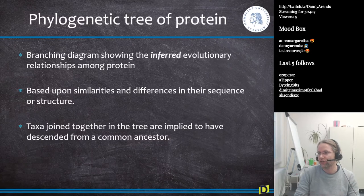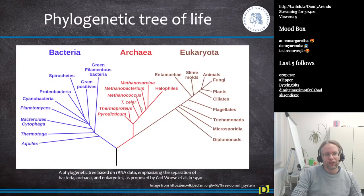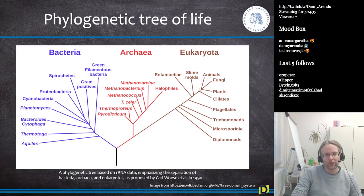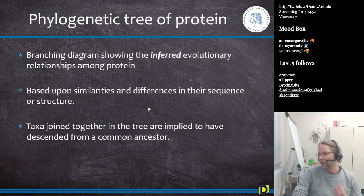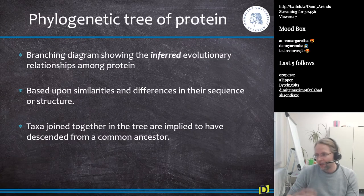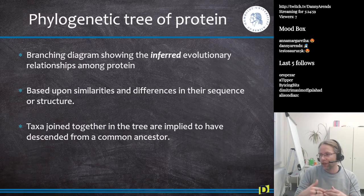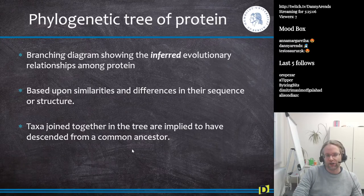The sequence has changed but the structure did not. When you look at a tree and see taxa joined together — for example, archaea joined with eukaryota at a certain point — that means there was a common ancestor for both groups. Similarly, we can see a common ancestor between animals, plants, and fungi, and also between methanosarcina and halophiles. The idea is that when two branches come together, it implies a common ancestor.